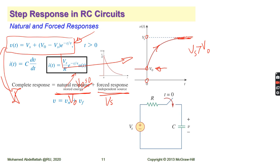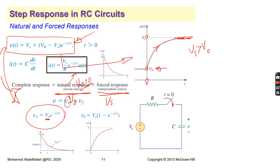So we can divide the total response into natural and forced components. The natural component contains V0, and the forced component contains Vs. If you have zero initial conditions, the natural component is zero. If you have no supply, the forced component is zero. If you have both, you have the complete total response.